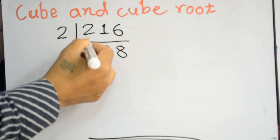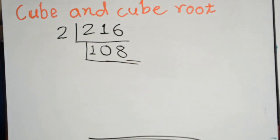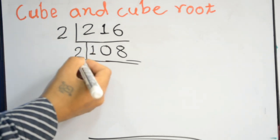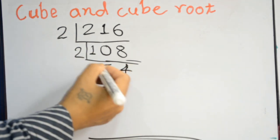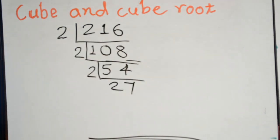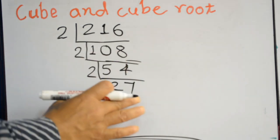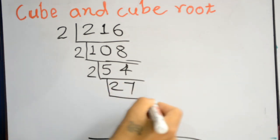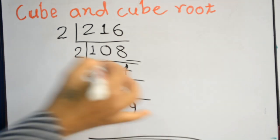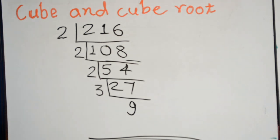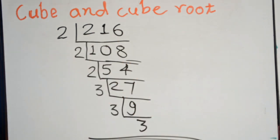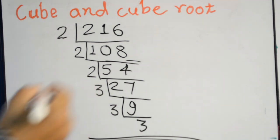We keep dividing by 2 as long as the number is even. 16 divided by 2 is 8, 8 divided by 2 is 4, 4 divided by 2 is 2. When the number becomes odd and no longer divisible by 2, we move to the next prime, which is 3. We divide by 3: 3 times 9 is 27, and 27 divided by 3 gives us 9, which is 3 times 3, until we reach a prime number.